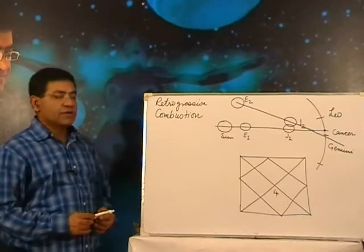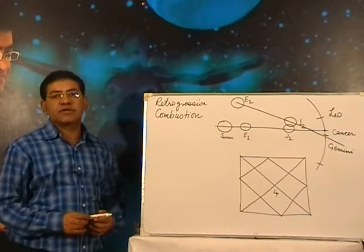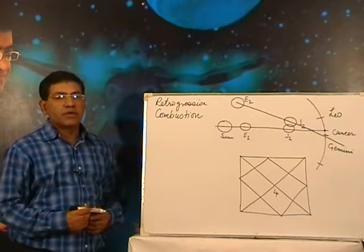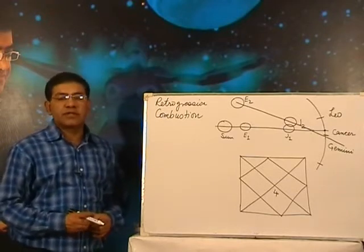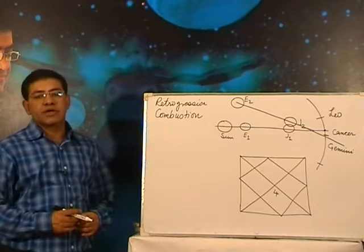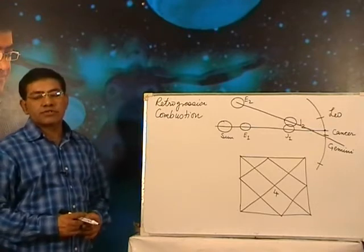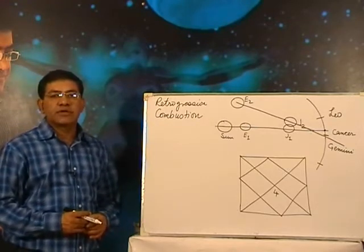You must have seen Retrogression and Combustion written in the Ephemeris. I will explain the meaning of this Retrogression and Combustion and also how it takes place in the Universe.